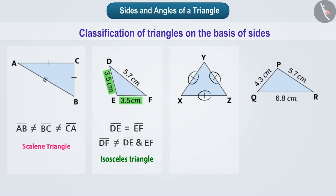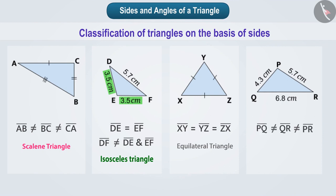Triangle XYZ has same sign on all the 3 sides so we can say that its 3 sides are equal. Hence, it is called an equilateral triangle. In triangle PQR, the measurements of the 3 sides are not equal. So this triangle is a scalene triangle.